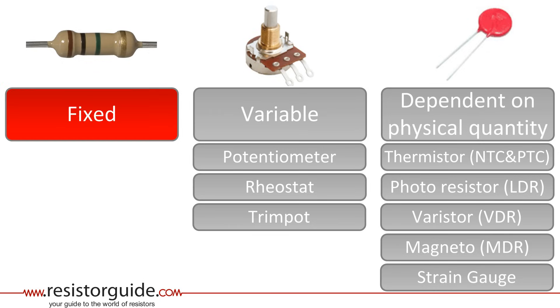Fixed resistors have a constant resistance value and they are the most common type. When people talk about a resistor, they most probably mean a fixed resistor. The picture shows an actual carbon film resistor. Fixed resistors are available in axial and SMD packages.